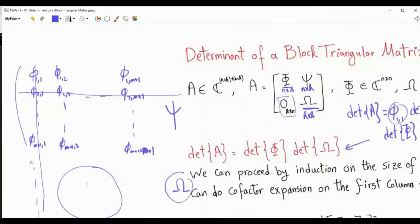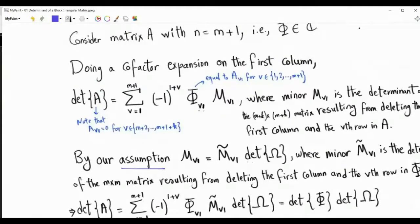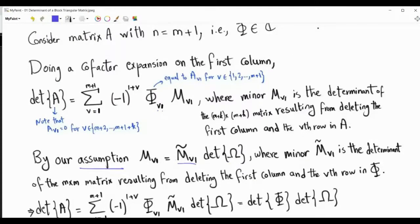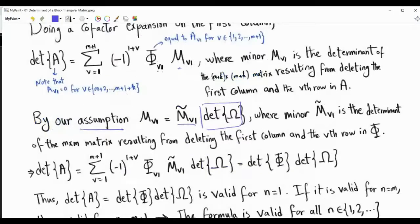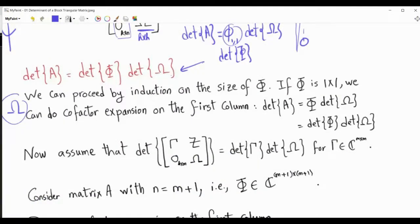By the induction assumption, M_{v1} = det(ω) × M̃_{v1}, where M̃_{v1} is the minor of matrix φ after eliminating the v-th row and the first column. All these terms share det(ω) as a common factor, so it can be taken outside. The remaining sum is exactly det(φ) obtained by cofactor expansion on the first column. Thus the result is valid for n=1, and if valid for positive integer m, it is valid for m+1, so the statement holds for every positive integer n.